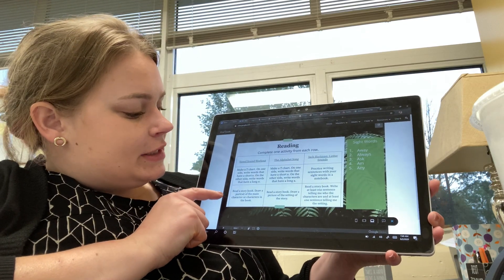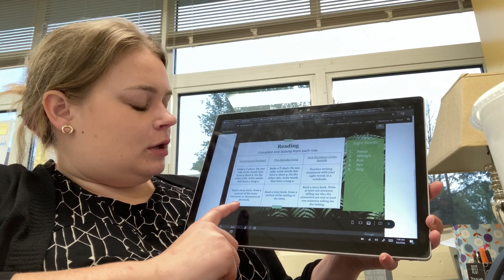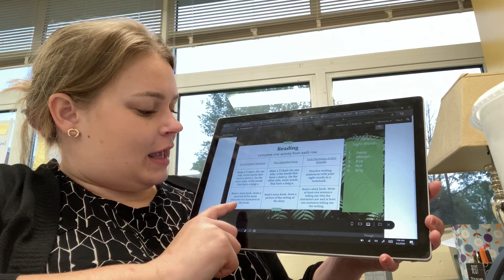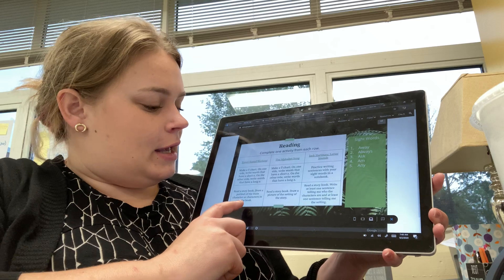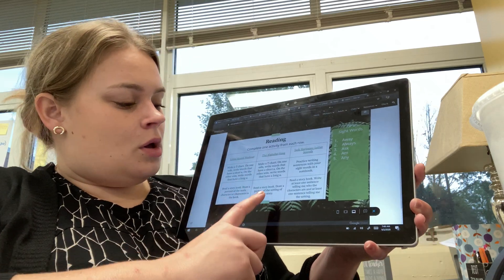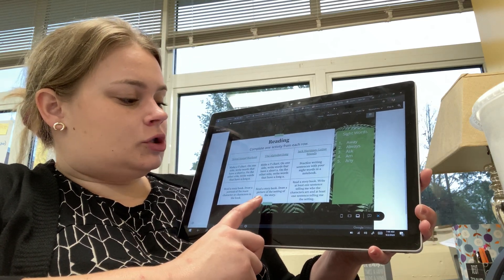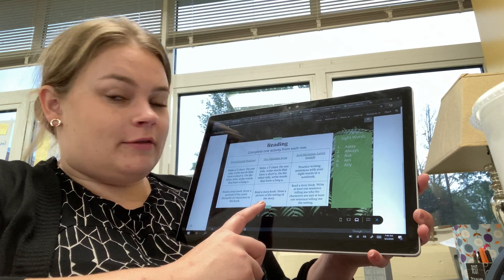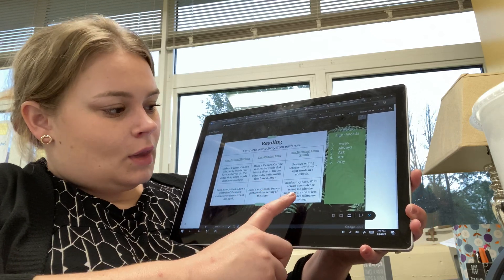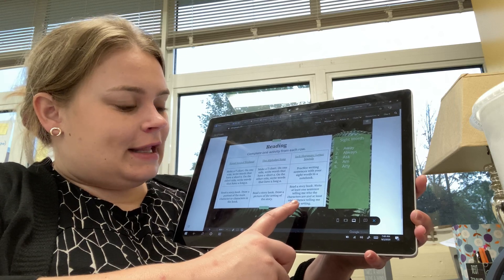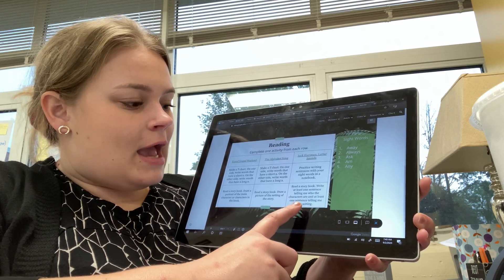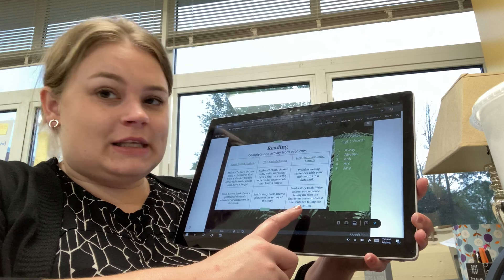And for your last row of choices, read a storybook. Draw a portrait of the main character or characters in the book. Read a storybook. Draw a picture of the setting of the story. Read a storybook. Read at least one sentence telling me who the characters are and at least one sentence telling me the setting.